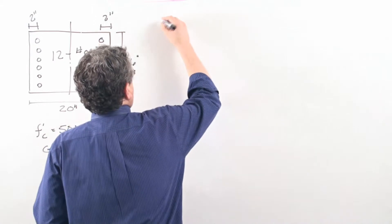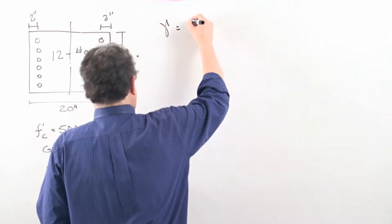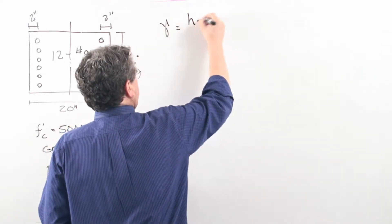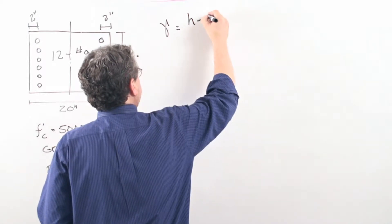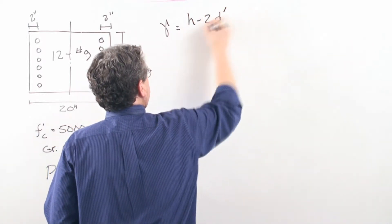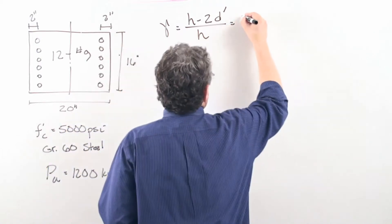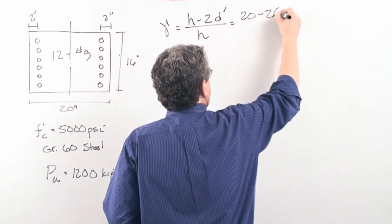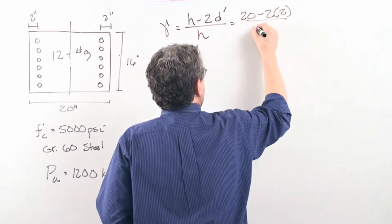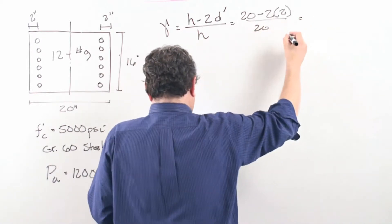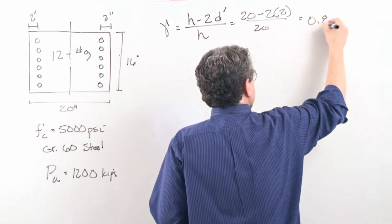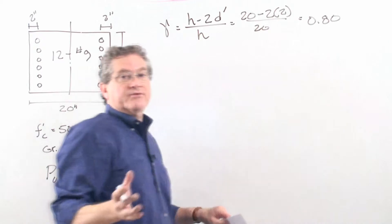So what we'll do is calculate the gamma as the depth minus the 2d prime over h, and so we've got our 20 minus 2 times 2 over then the 20, and that comes out, lo and behold, to be exactly 0.80, so we're in luck.